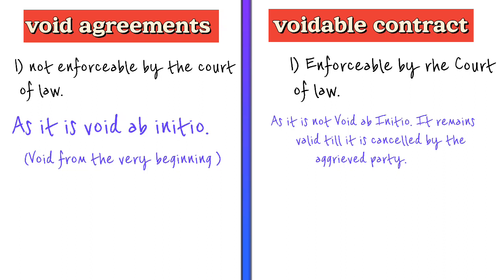So remember: void agreements are void ab initio, while voidable contracts become void at the option of one party.